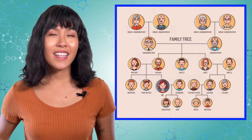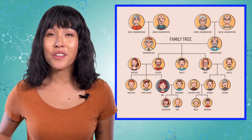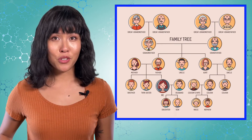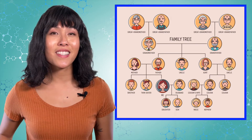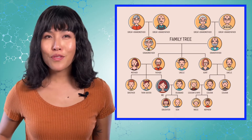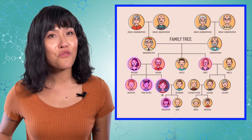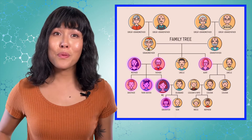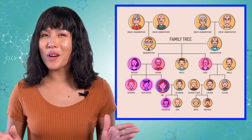Have you ever looked at a family tree? It's an easy way to see relationships between you and your nearest relatives. Biologists use family trees too, to track the inheritance of traits. In this family tree, we're going to track the inheritance of red hair. Quite a few people in this family have red hair, but not everyone.